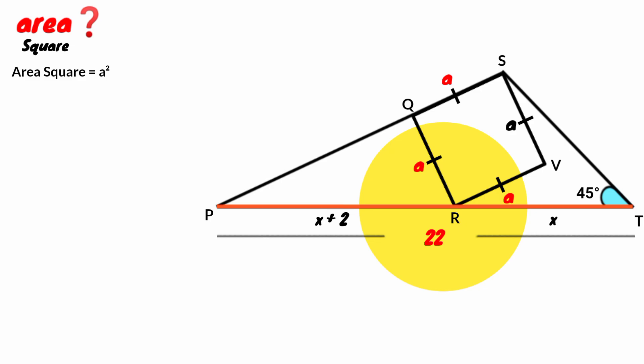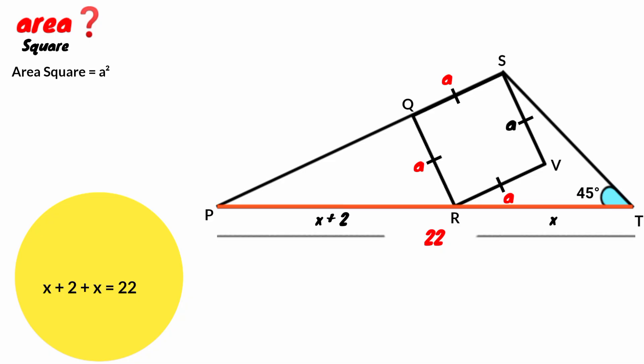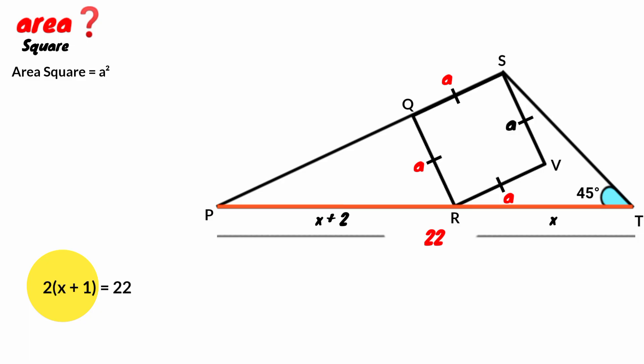Come to this side PT. Its length is 22 and we have it divided into x plus 2 and x. So we can say x plus 2 plus x equal to 22. x plus x is 2x, from 2x plus 2 we can factor out 2, so it is 2 times bracket x plus 1.